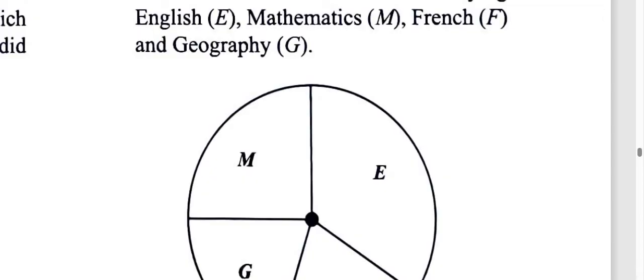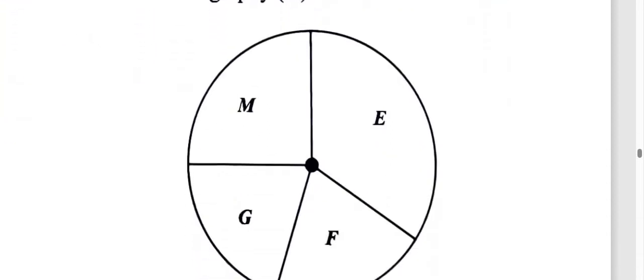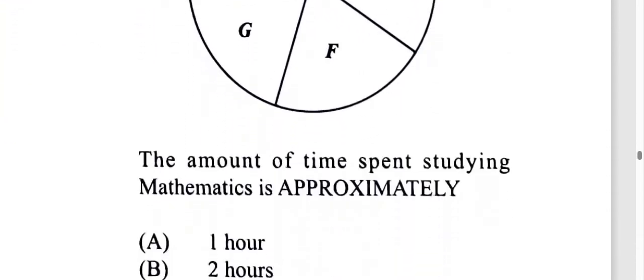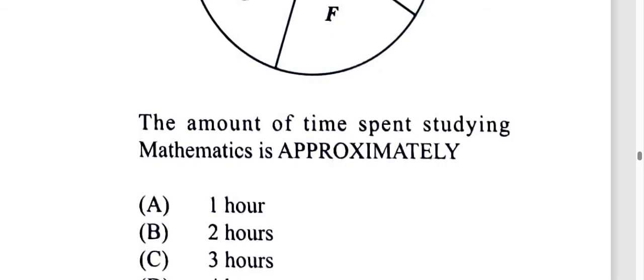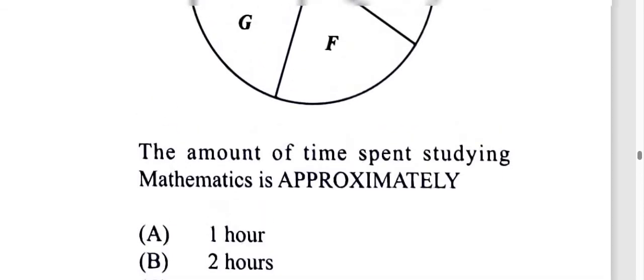Alright, so here we have a pie chart that shows students use 12 hours in studying English, math, French, and geography. And they want the time spent studying math. Is it approximately one, two, three, or four hours? Well, let's see.